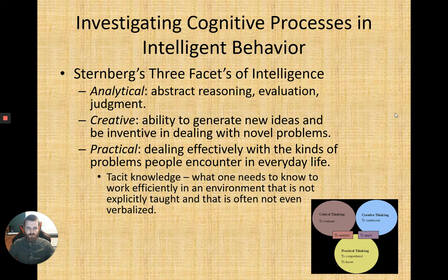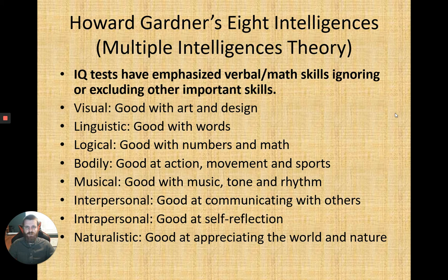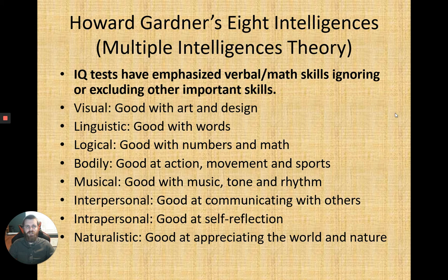Another model is Howard Gardner's multiple intelligences theory, which has eight intelligences. This is a somewhat controversial theory because it partly led to the concept of learning styles, which has been disproven. The idea is that there are many important skills based on different types of intelligence — visual, linguistic, logical, and others — suggesting intelligence is far broader than traditionally tested.